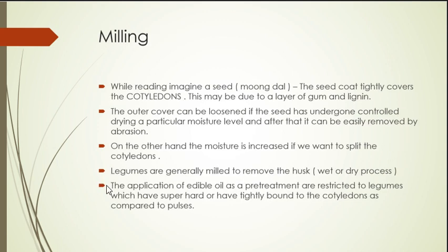Milling — imagine a moong dal seed. The seed coat tightly covers the cotyledon. The cotyledon is the inner matter, and the green cover is the outer covering. The seed coat tightly envelops the cotyledon, probably through a layer of gum and lignin. The husk can be loosened and rendered brittle by either controlled drying or a critical moisture level, and then easily removed by abrasion.